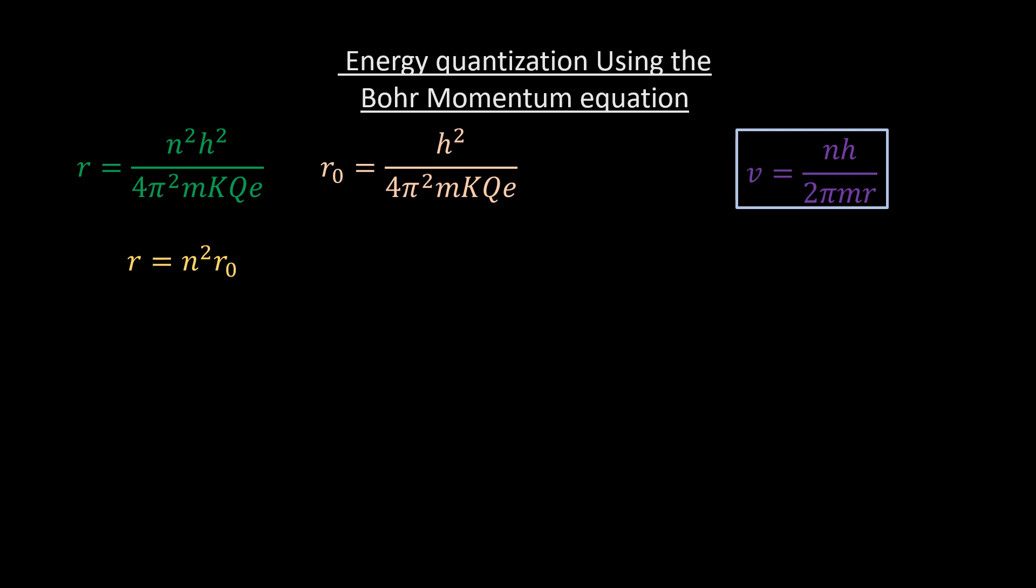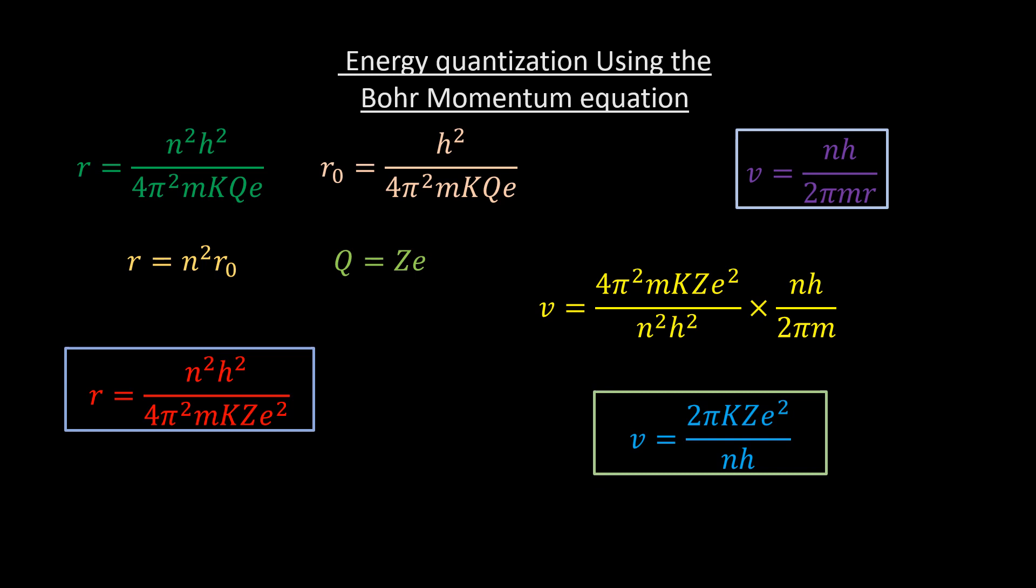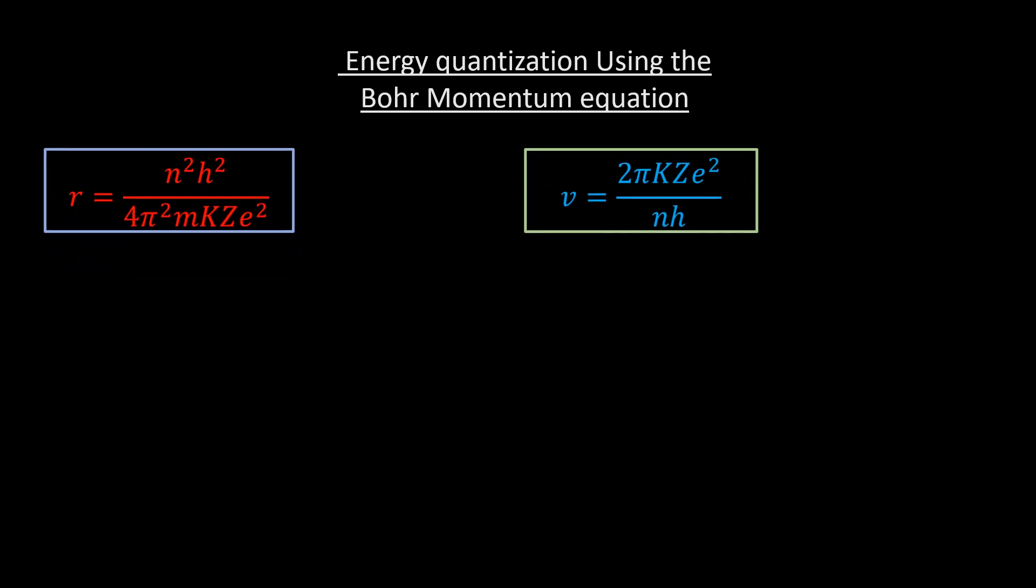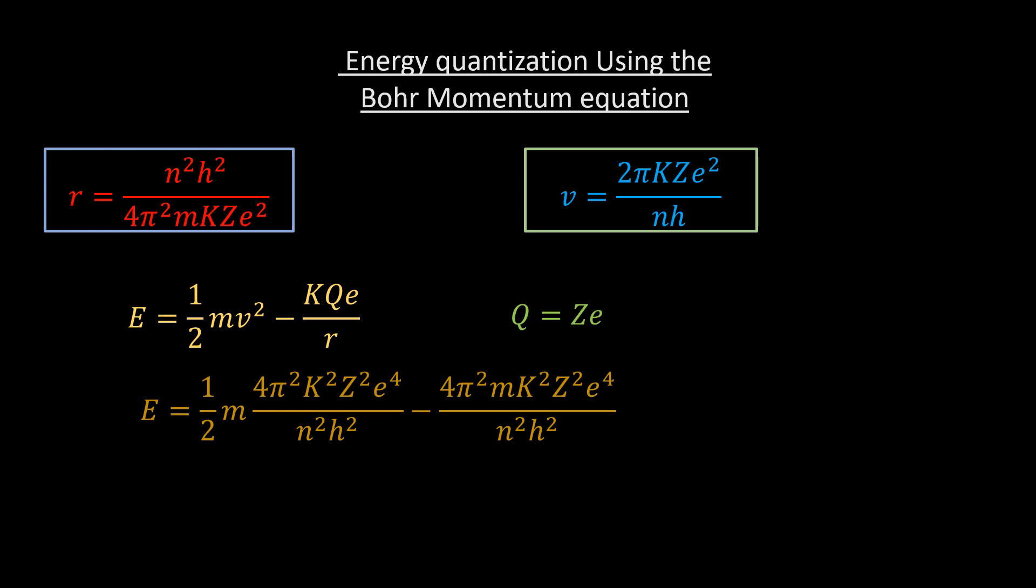We know that the charge of the nucleus is the atomic number times the charge of one electron. So putting these in their equation produces the following red expression. Subbing this red equation in their expression for velocity produces the following yellow equation for v as a function of the quantum number n. Classically, the total mechanical energy of a particle is given by the following equation in terms of v and r. Subbing in the above equations for v and r produces the following result. The two terms in their equation are identical, with one being half of the other. So simplifying just gives negative half of it. This is the energy quantization equation according to the Bohr model.